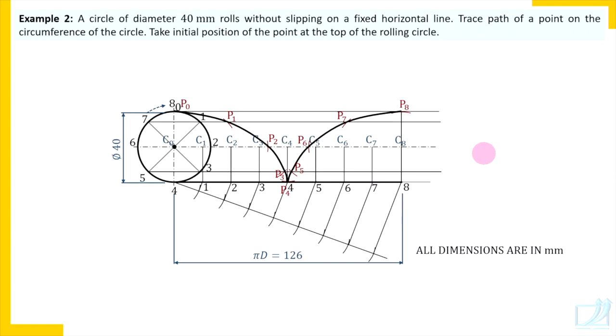Take care of line work. Circle in its initial position must be thick. In the sense, you should draw it with thick lines. Then length πD, the horizontal guiding line must be thick. And the curve itself must be thick. If you are asked to draw normal and tangent, then normal and tangent must be thick. And all other lines must be thin lines.